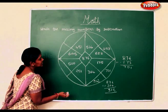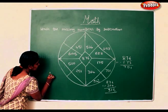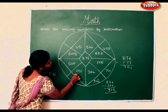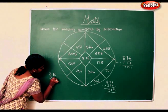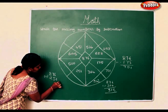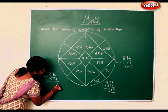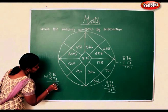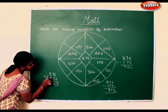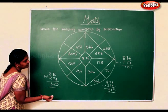Just do another sum, then you can try the rest by yourselves. 876 less 251. Now 6 minus 1 is 5. 7 minus 5 is 2. 8 minus 2 is 6. So 625.